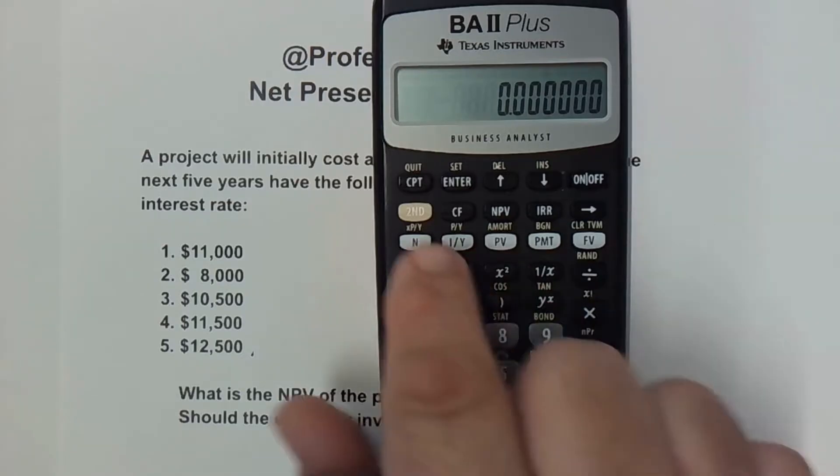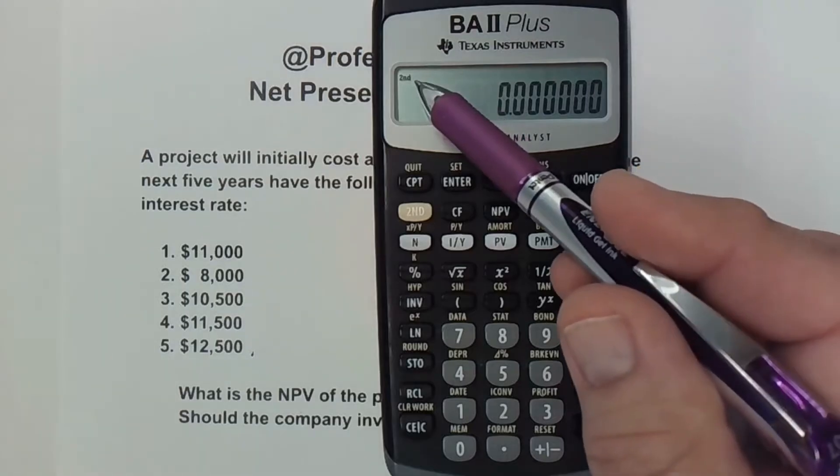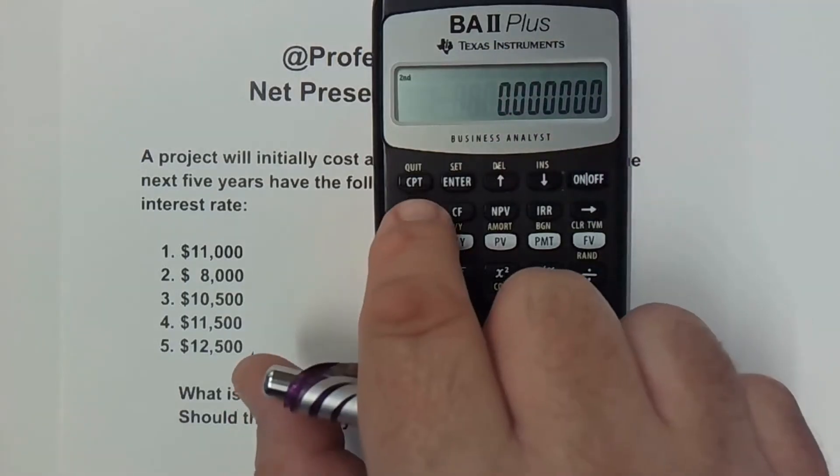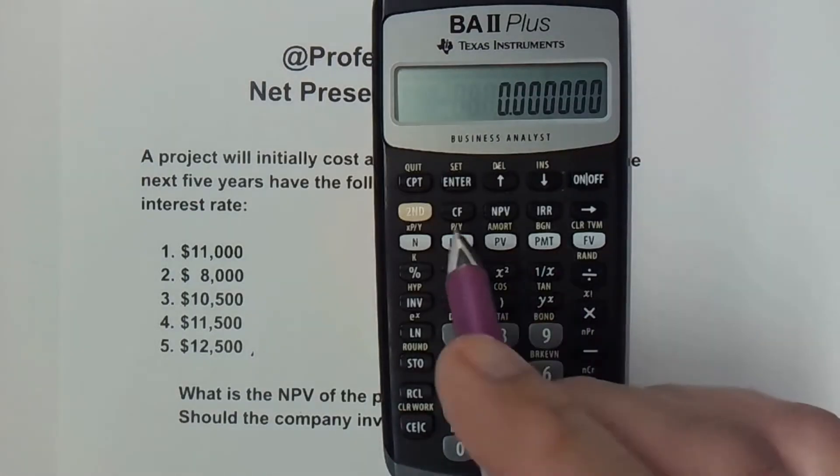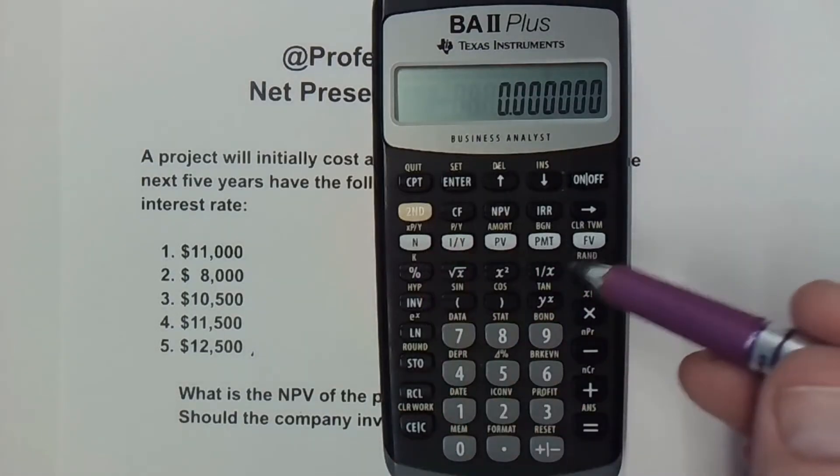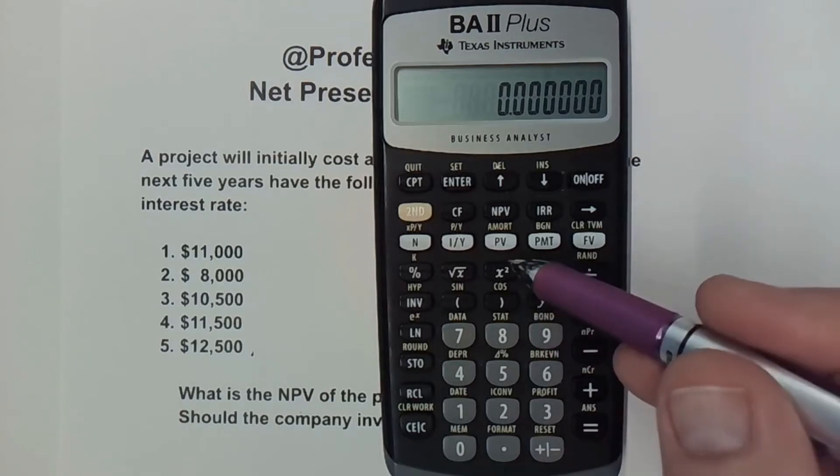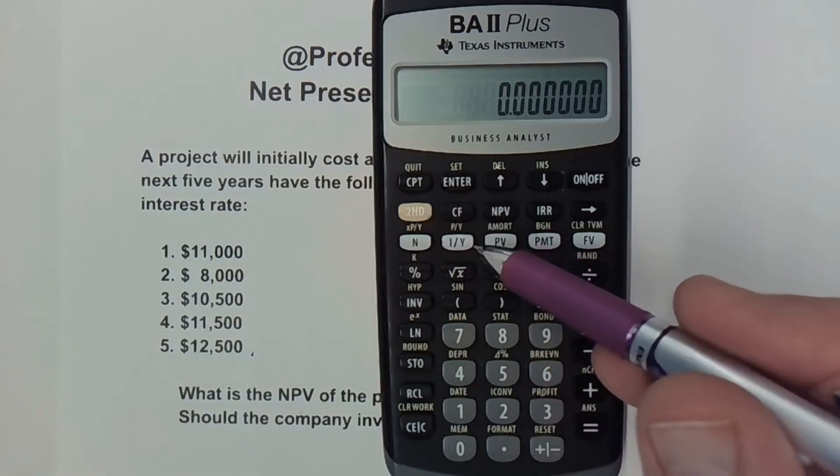And anytime you hit the second button, you can see that there's a little icon that pops up that shows you that it's active. And I hit it again, and it turns it off. So that is how you access these functions that are above the keys. They are in the same color as the second button.